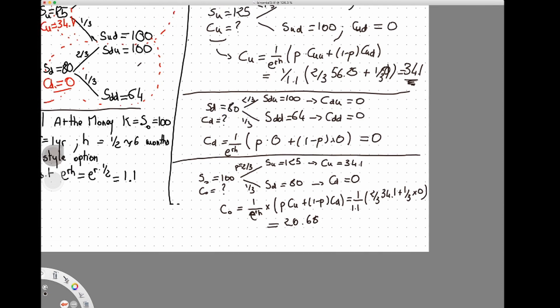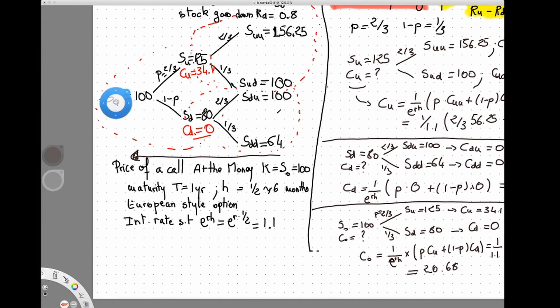Zooming back out to the original tree, we can conclude that the price of the call option is $20.68. This is how you can price a call option — or any option — using risk-neutral pricing on a multi-period binomial tree. Remember, this is a European-style option; we'll discuss American-style options later. Let me know if you have any questions or what you'd like to see in the future. Thanks for watching.